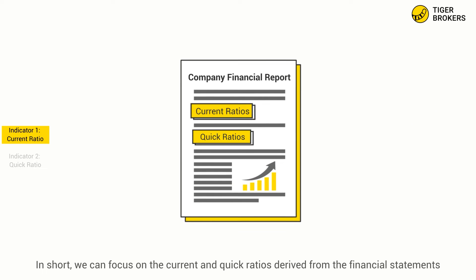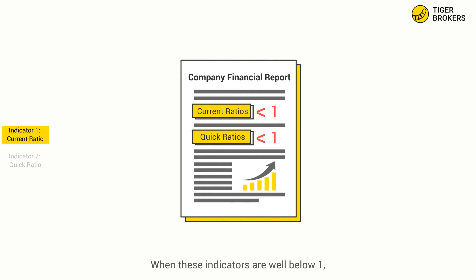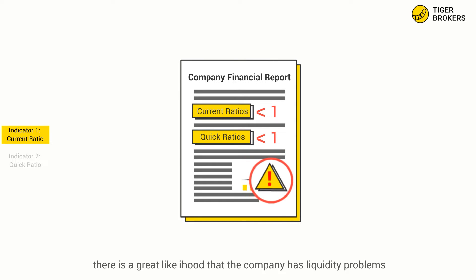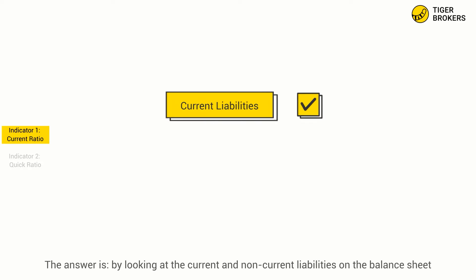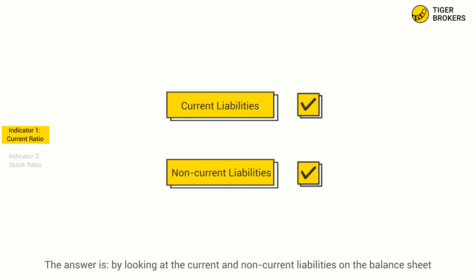In short, we can focus on the current and quick ratios derived from the financial statements. Where these indicators are well below 1, there is a great likelihood that a company has liquidity problems. Some of you may ask: how do I calculate these two indicators? The answer is by looking at current and non-current liabilities on the balance sheet.